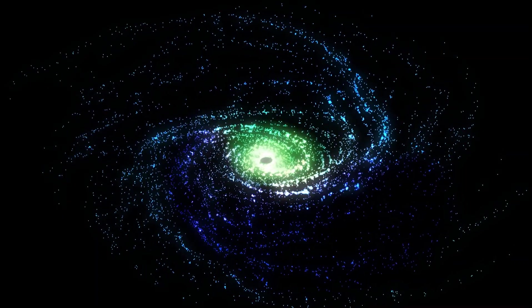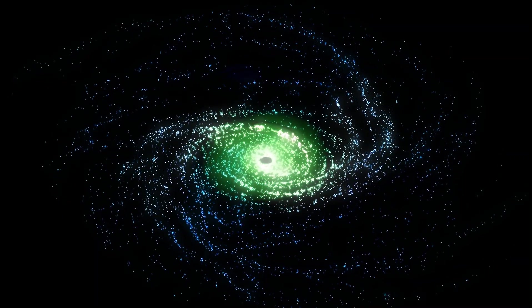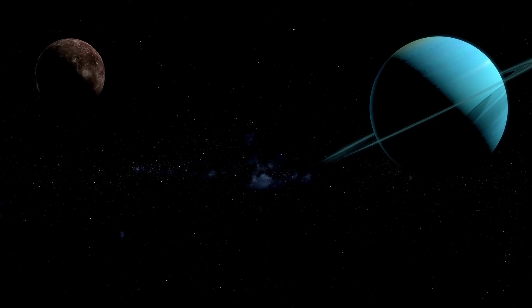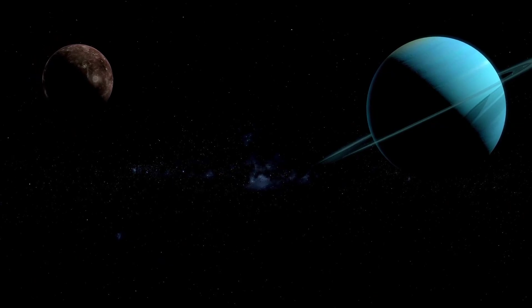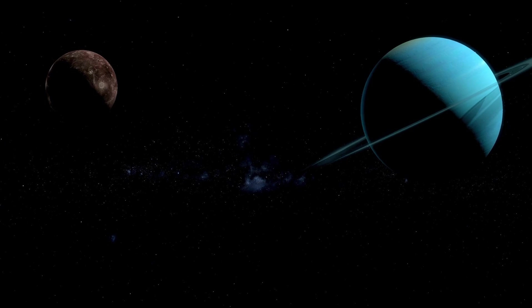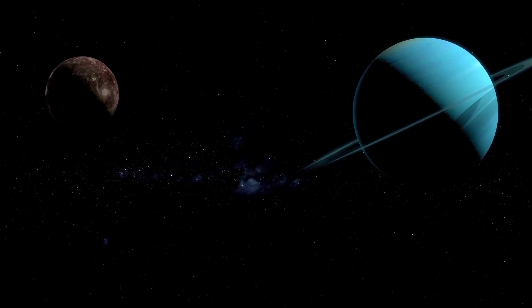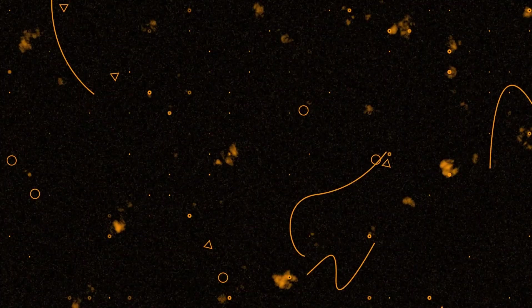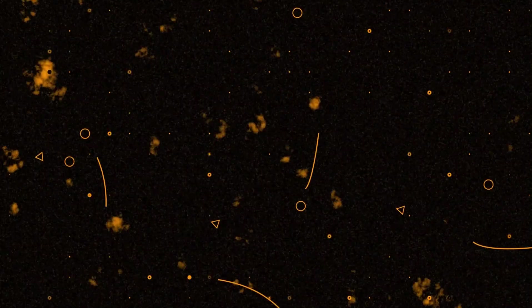Since 1604, we have not yet witnessed a supernova in our own galaxy, although one occurred in 1987 in the Large Magellanic Cloud, at a distance of 169,000 light-years with remarkable effects. Although it did not pose a direct risk to us, the dangerous zone around a typical supernova is an intriguing concept that could have serious implications if such an explosion were to occur nearby.